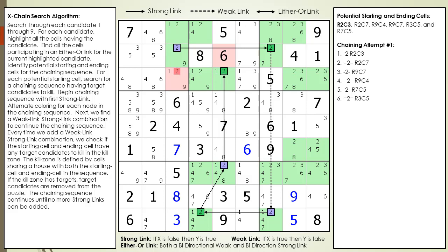The logic for the X-chain is as follows. If the starting cell has a value of 2, the target candidate is killed in the kill zone. If the starting candidate is not 2, then the logic of the chaining sequence kicks in and we end up with a value of 2 in cell 3, 5 as shown. This also results in the target candidate in the kill zone being killed.